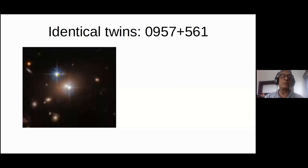They could also measure the spectrum of the galaxy, but what is unusual is that these two objects had virtually identical spectra. These are called quasars — they represent a very energetic phenomenon around the black hole in the center of a galaxy, which can emit across all regions of the electromagnetic spectrum. It's a remarkable coincidence if the ratio of emission across the entire electromagnetic spectrum is identical for these two objects.